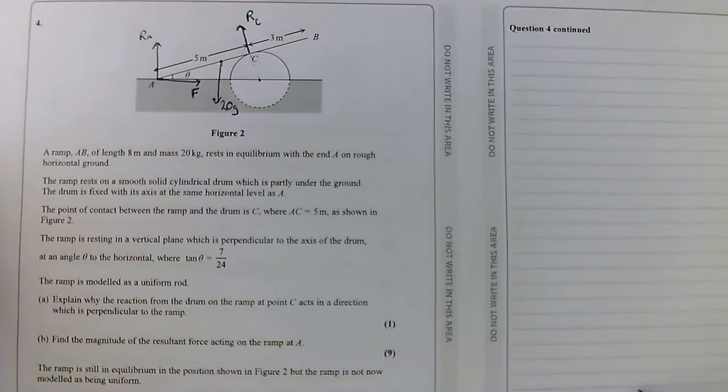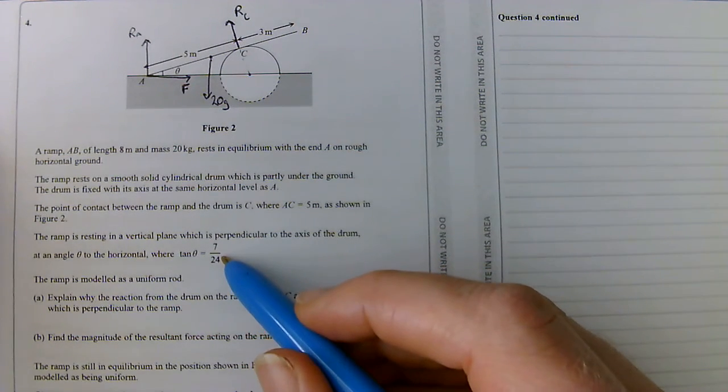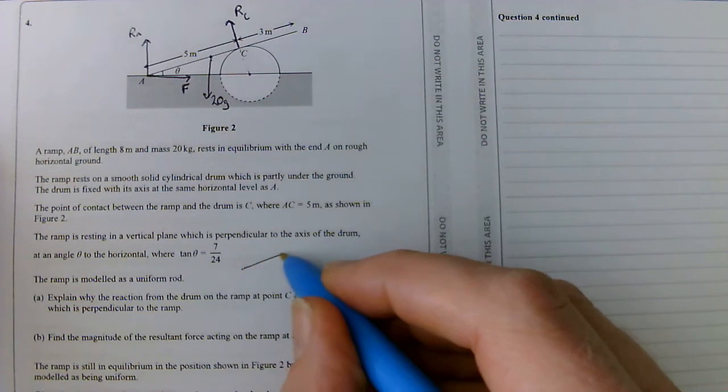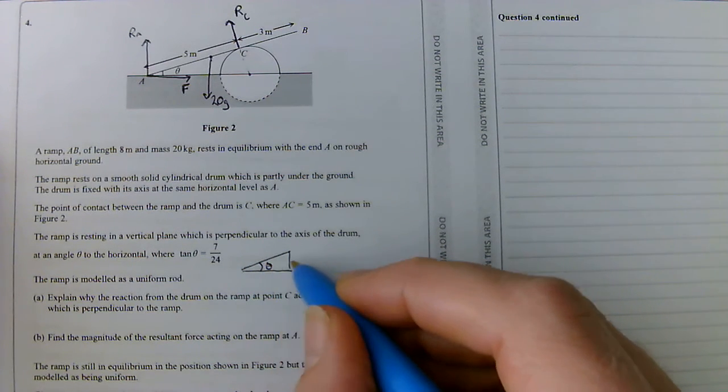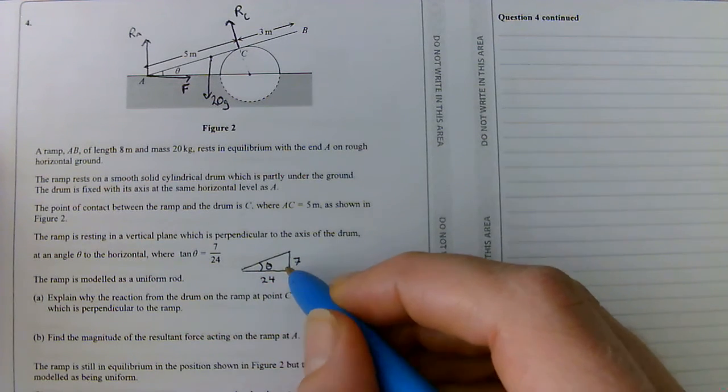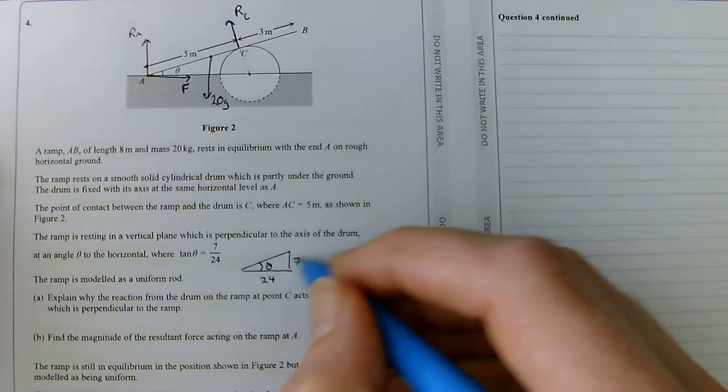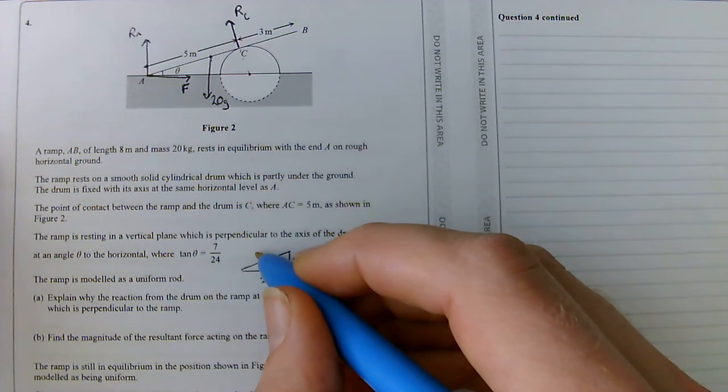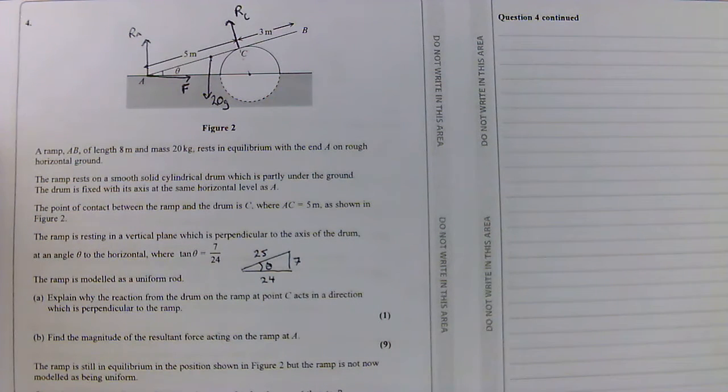The next thing I'm going to do, now that I've drawn my diagram, I want to be able to do something with those angles. I'm told that tan theta is 7 over 24, so I'm going to use Pythagoras. There's my angle theta, my opposite is 7, my adjacent is 24. Using Pythagoras, 24 squared plus 7 squared gives me 625. Square root of that is 25. So that enables me to find sine theta and cos theta.